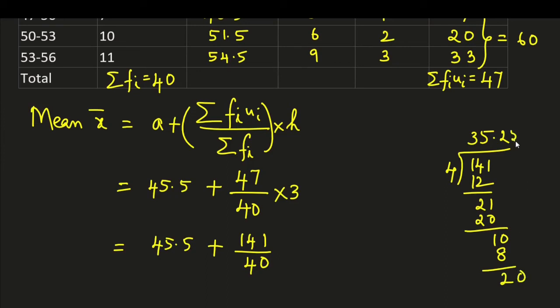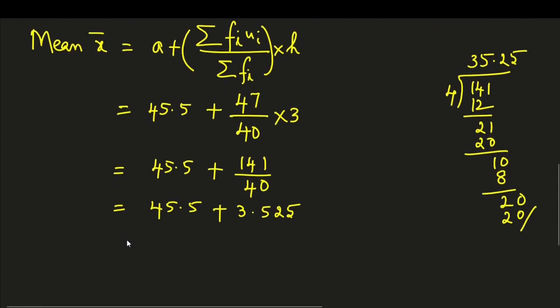So it is 3.525. So this is equal to 45.5 plus 3.525. So this is 49.025.